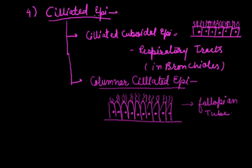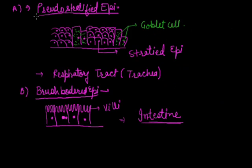The next type is ciliated epithelial tissue, where cilia are found at the free end of cells. If found on cuboidal cells, it is called ciliated cuboidal epithelium, found in the respiratory tract where cilia help in the filtration of air. The second kind is columnar ciliated epithelium, where cilia are arranged at the free end of column-like structures, usually found in the fallopian tube or oviduct. Special modifications include pseudostratified epithelium — a multilayered structure with interruptions formed by unicellular goblet cells.